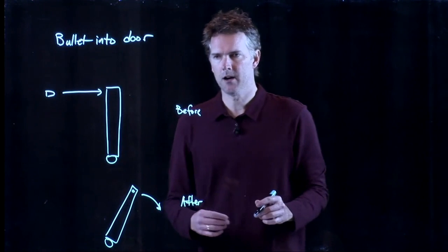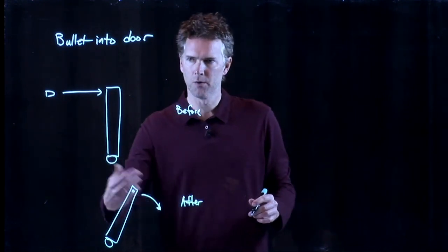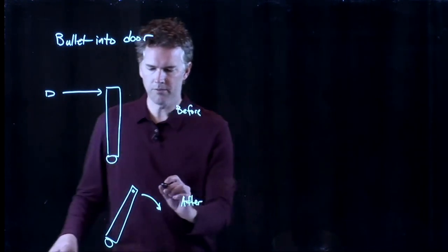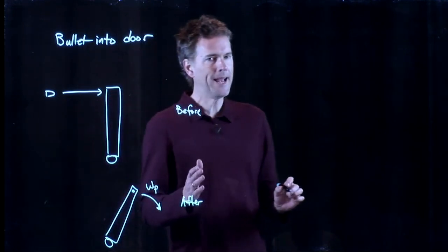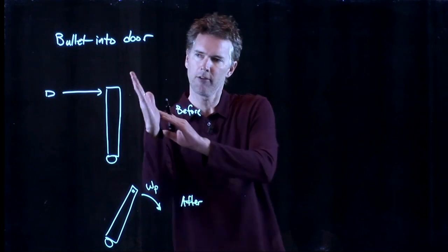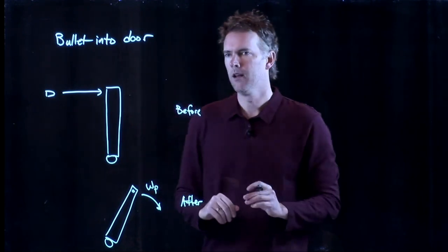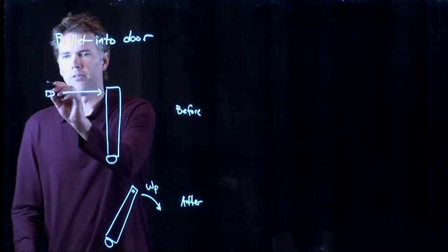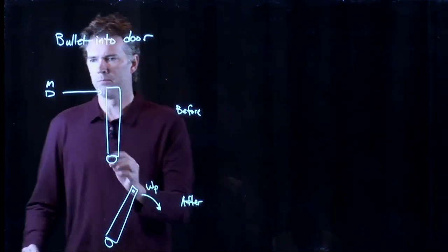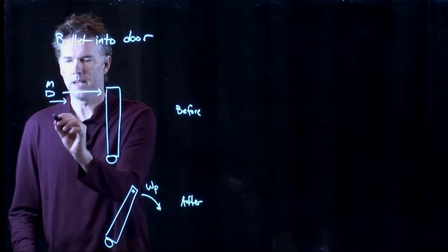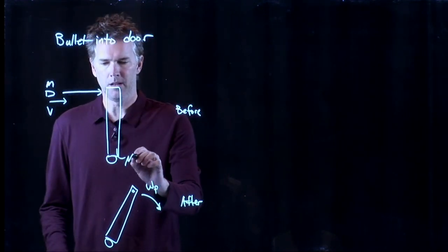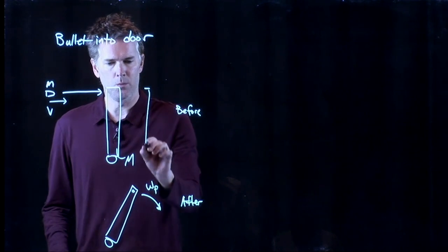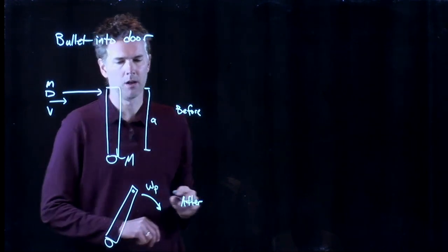And what we want to figure out is how fast does that door swing open? What is this omega final? Remember omega is angular speed. How fast is that door rotating in radians per second? And we'll give you some parameters here. This bullet has mass m. It's coming in at v. The mass of the door is capital M. The width of the door we will call a.